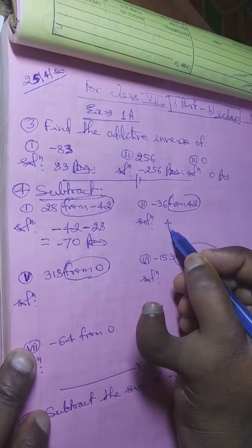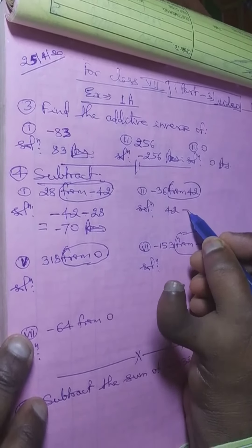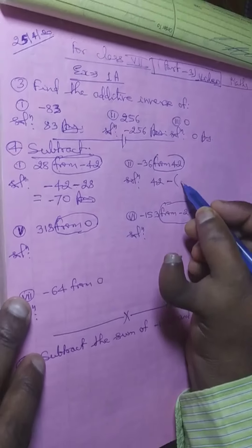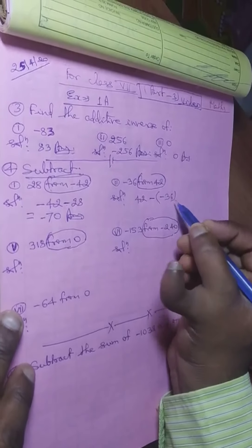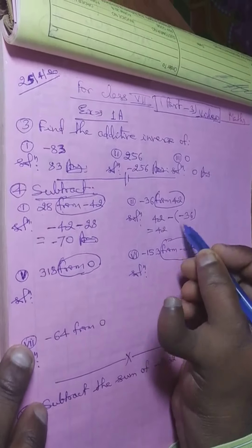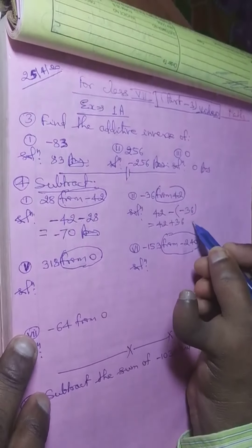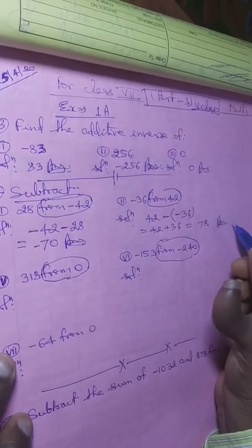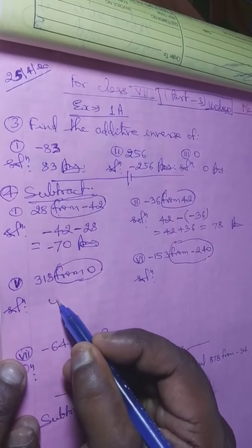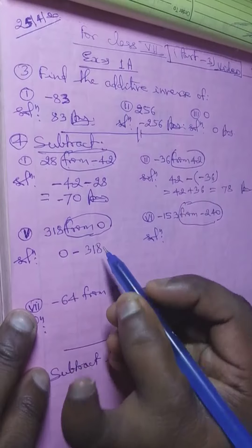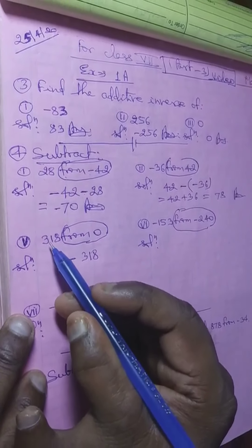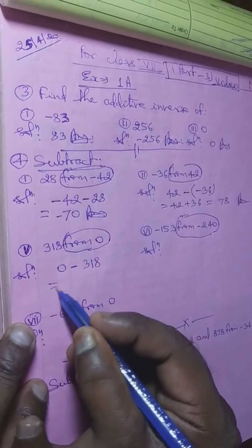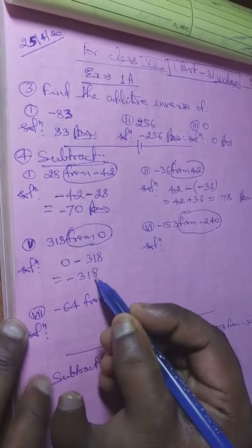From 42, subtract minus 36. The sign of subtraction is negative, and before 36 a minus is already given. So 42 minus minus 36 becomes 42 plus 36. The answer is 78. From 0, subtract 318: 0 minus 318. Before 318 the sign is positive, so positive into negative gives negative. The answer is minus 318.